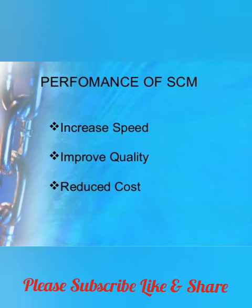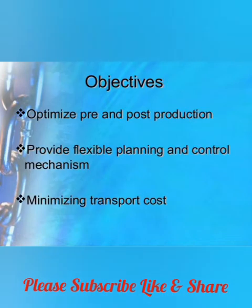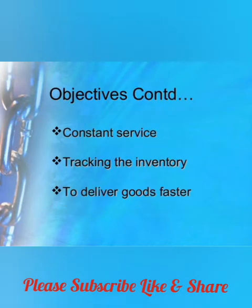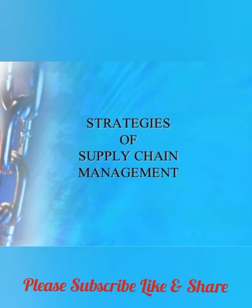Performance is measured by increased speed, improved quality, and reduced cost. Whoever goes for a good product will obviously monitor quality, and cost effectiveness is also a focus. The objectives that need to be optimized include pre and post production, flexible planning and control mechanisms, minimizing transport cost, tracking inventory, and delivering to the right place.